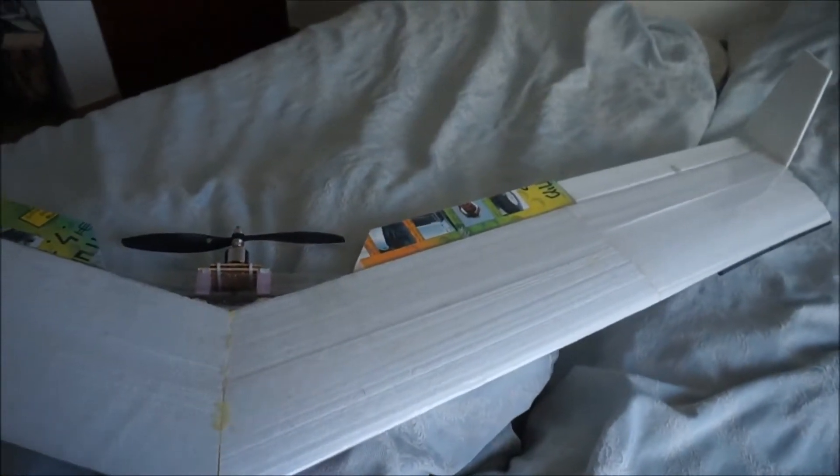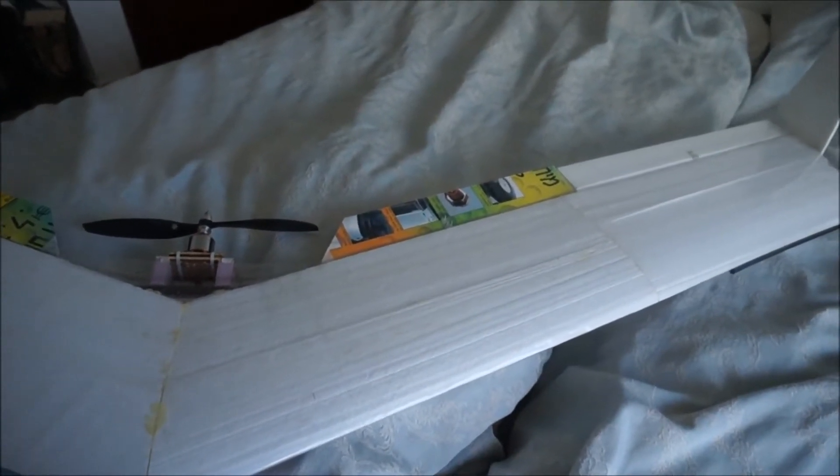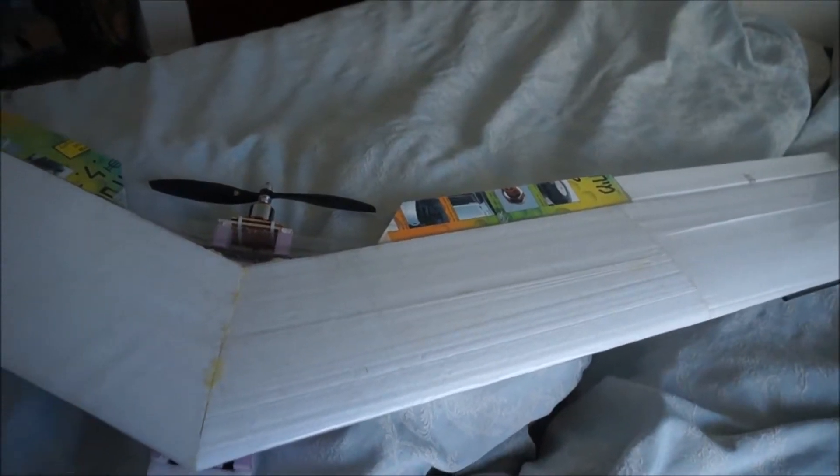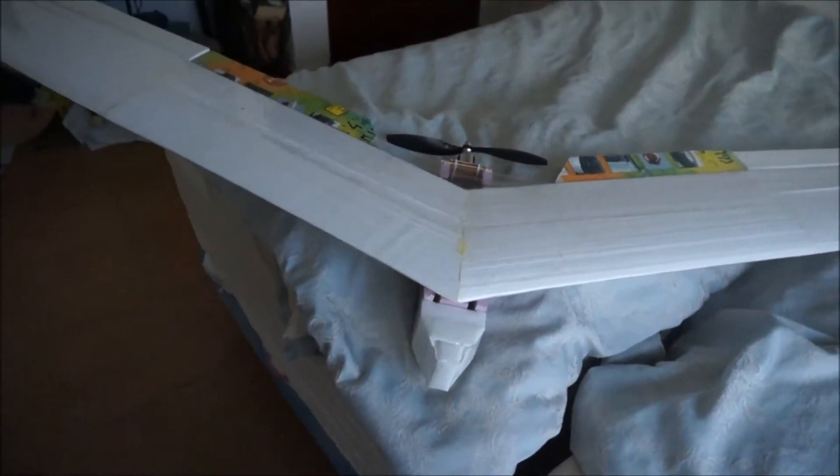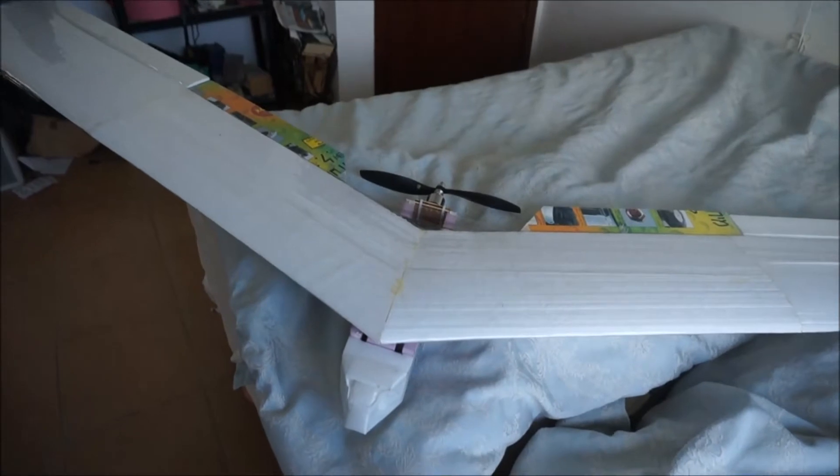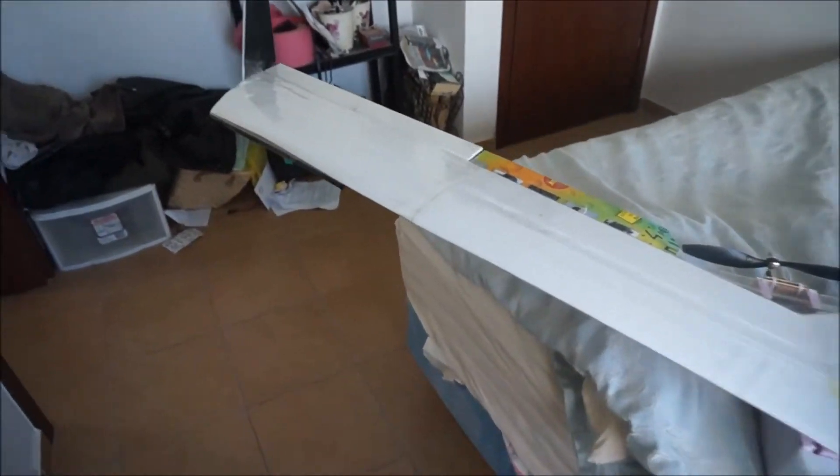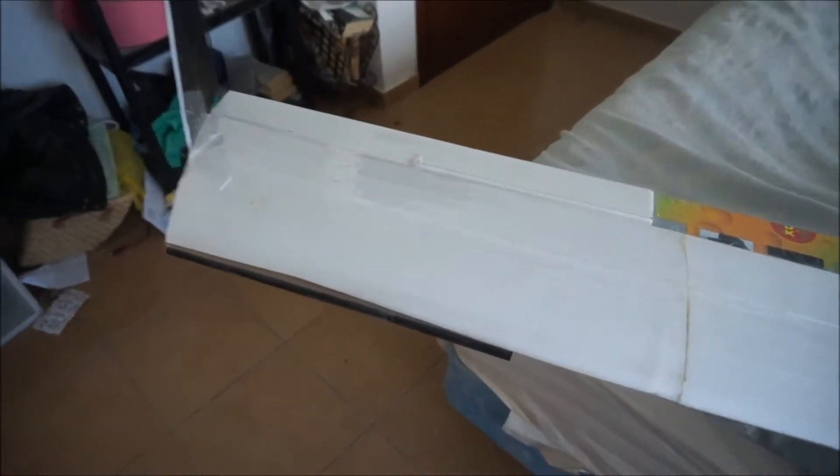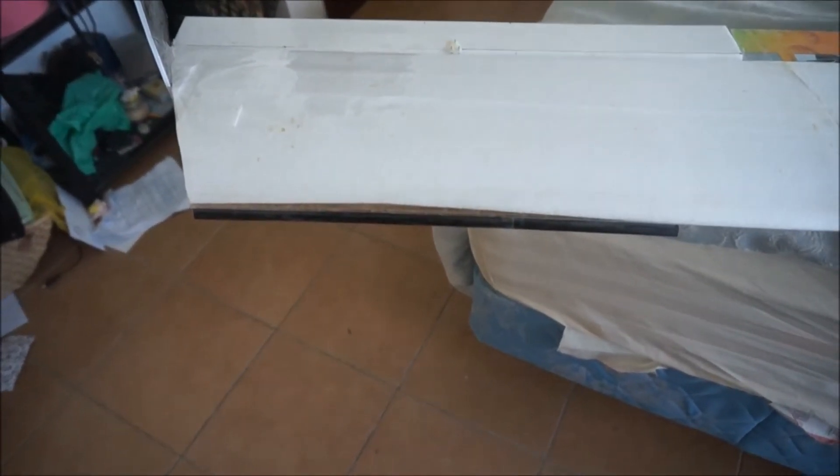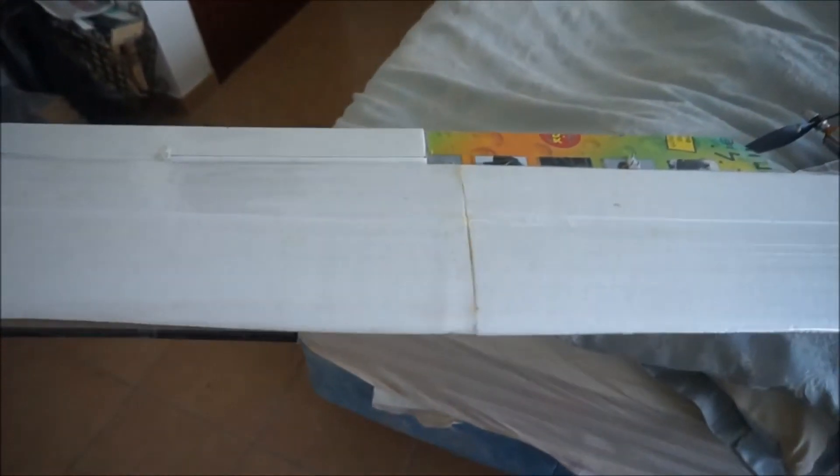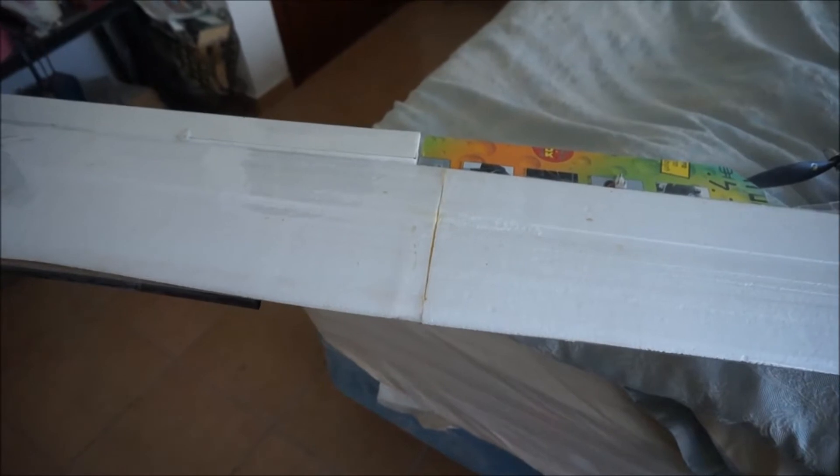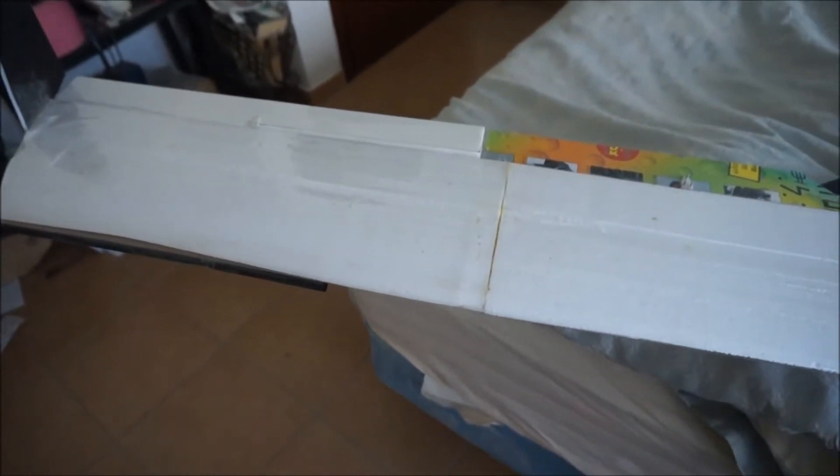The wing loading is about 6.25 ounces per square foot. The span is 80 inches. I have the typical drooping leading edge cuffs here so that the outboard section of the wing stalls after the inboard section, so we don't have any violent wing dropping at or near stall.